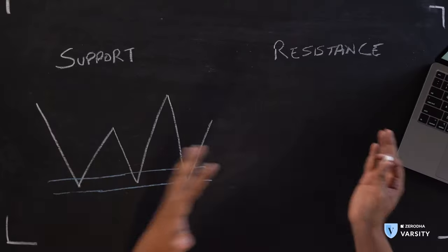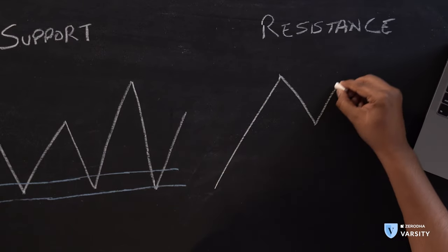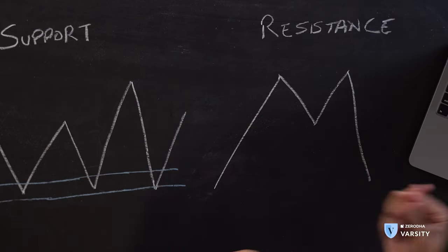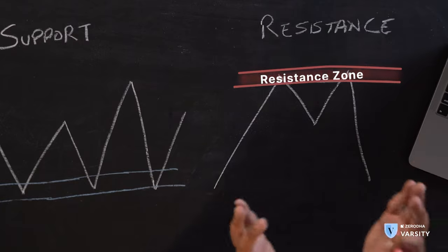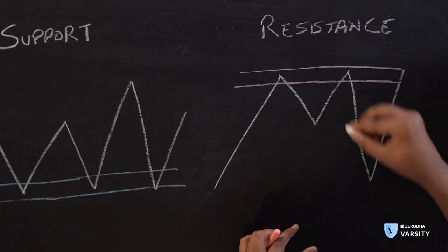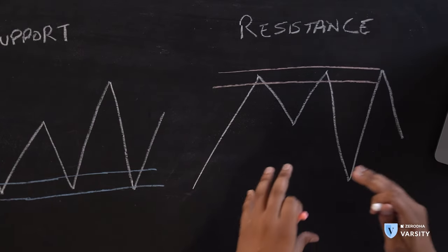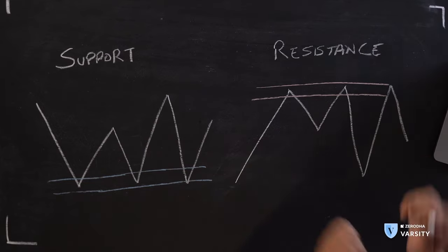Now let's talk about resistance. Resistance is the exact opposite of support. The market goes up, falls down, goes up again, and around the same area where it faced supply earlier, it reverses and falls down again. This becomes our resistance zone — an area where there was more supply, meaning more selling than buying, and the market reversed from that point twice. Just like support, as markets go back up near that area, you expect the market to reverse again, with resistance kicking in and traders starting to sell, pushing prices down.